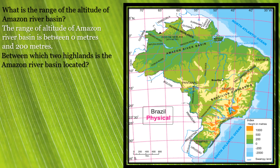The next question: between which two highlands is the Amazon river basin located? The Amazon river basin is located between the Guiana highlands to the north and the Brazilian highlands to the south.